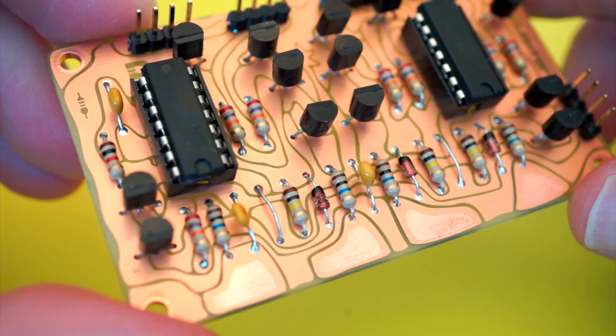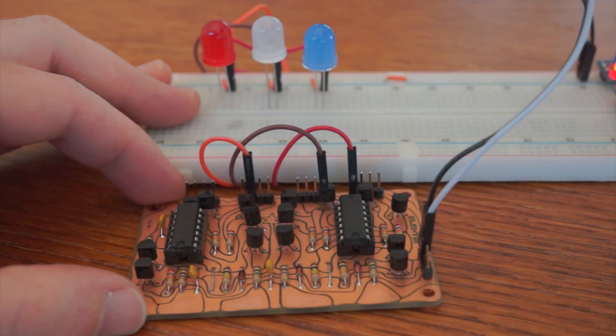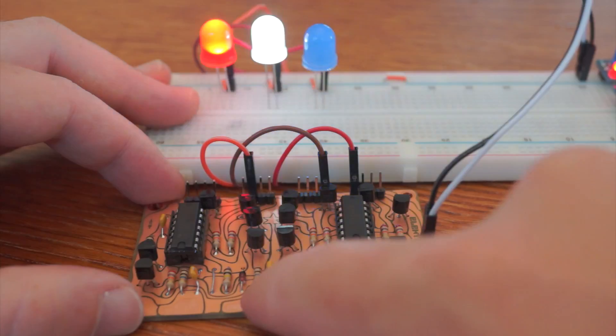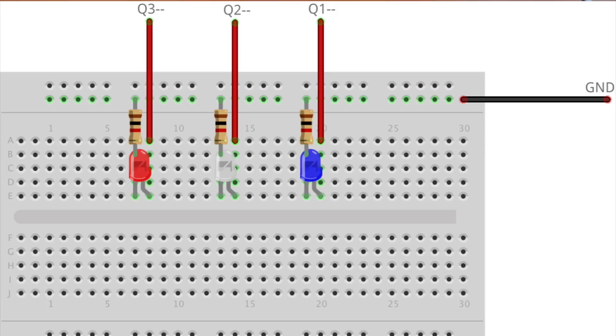The easiest way to do that is to breadboard a simple circuit with three LEDs. Here's the breadboard layout of what I did. Current limiting resistors on each LED are a good idea, but I whipped this up pretty quickly and it seemed to work fine without them.